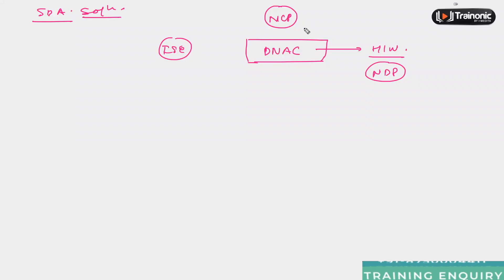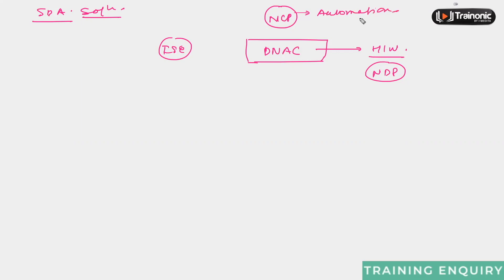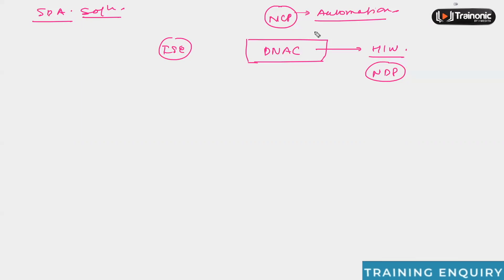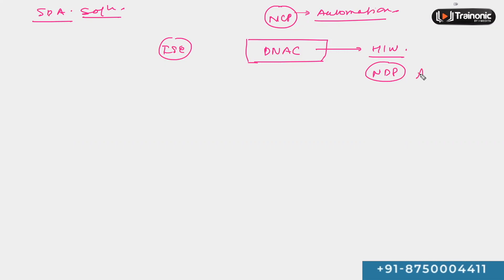From the Network Control Platform, we can do all the things related to configuration management. This is where we define our intent. You can say this is the automation engine for the SDA solution. From DNA Center, we define our intent and the Network Control Platform deploys that intent into the entire infrastructure. So the Network Control Platform handles the automation part of DNA Center.